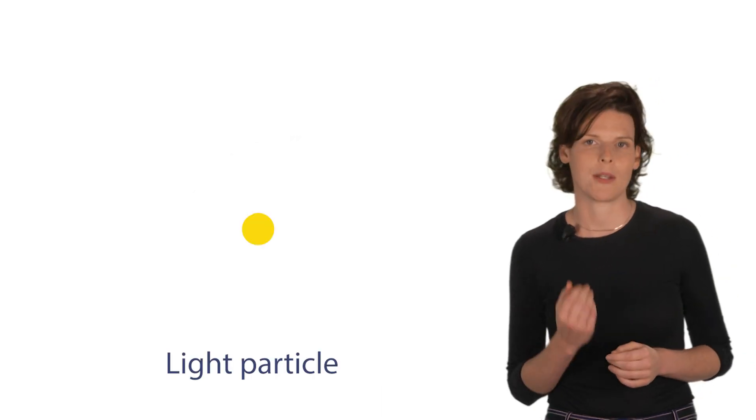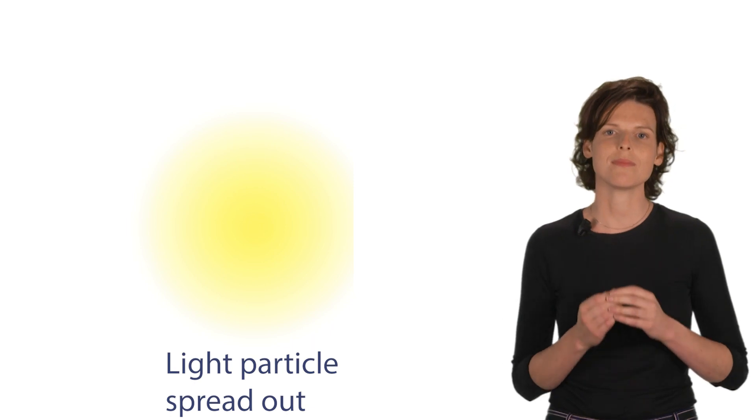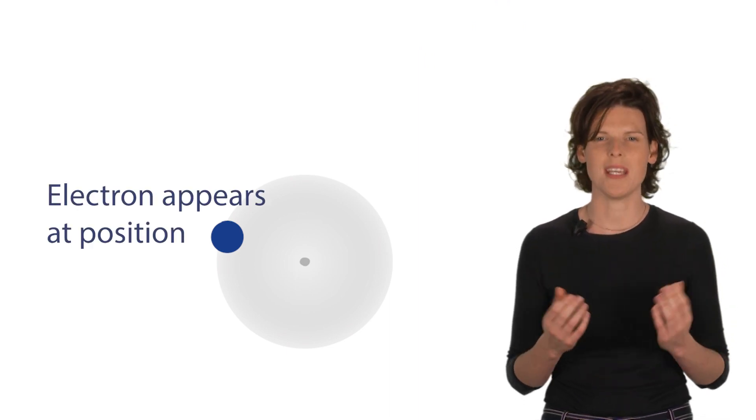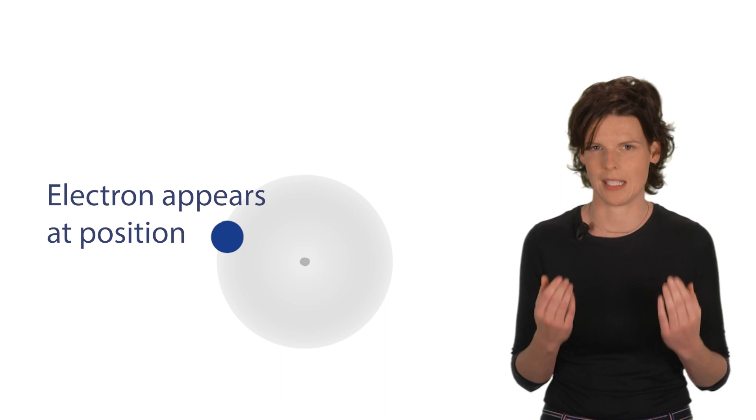And particles make up light can be spread out as well. An interaction between a light particle and an electron can make it appear at a position. But what location of all options does the electron appear?